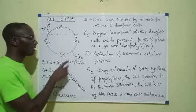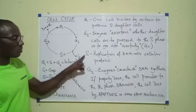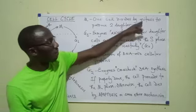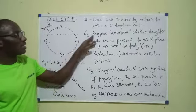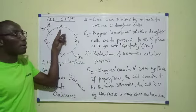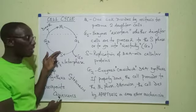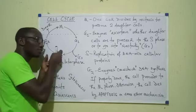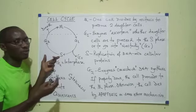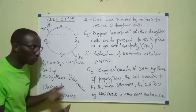Assuming the cell is qualified to continue, the next thing it will do is carry out DNA replication, which occurs at the S phase. You can see here the activities going on in the different phases. At M, one cell divides by mitosis to produce two daughter cells. At G1, proteins ascertain whether daughter cells from M should proceed to S or go into quiescence. At S, the cell undergoes replication of its DNA — if it initially contained 46 chromosomes, those 46 will produce extra copies to become 92. Some other proteins within the cell are also produced at this stage.